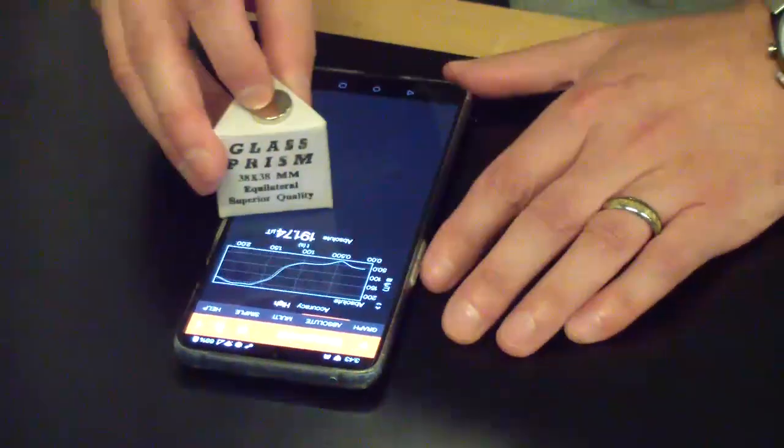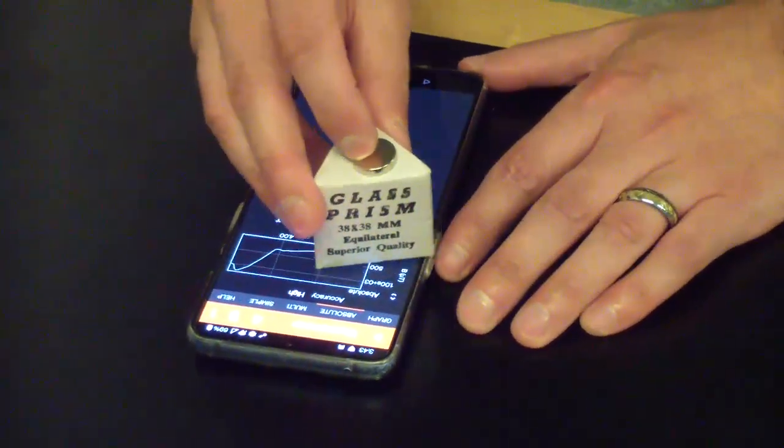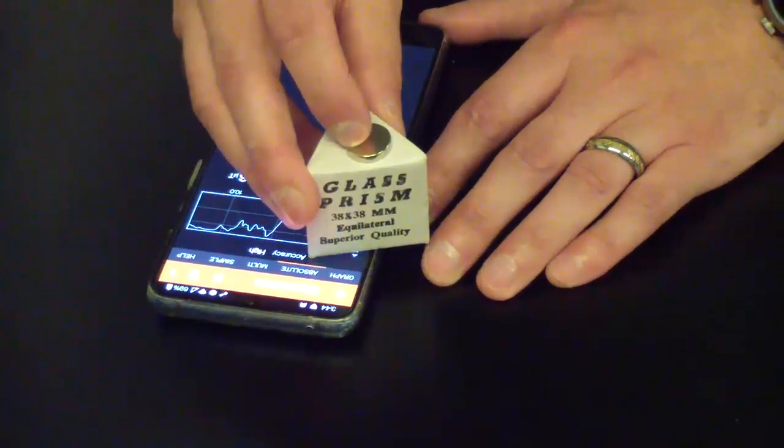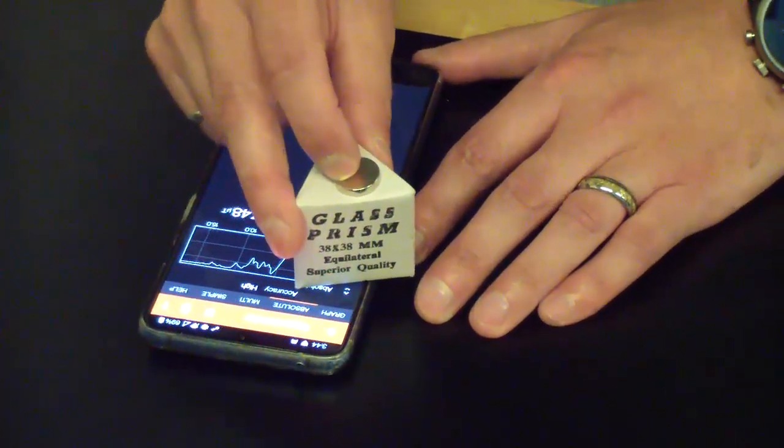In Firefox, start a magnetometer measurement and select Absolute. Move the magnet around until you find the maximum magnetic field value. This is the location of your magnetometer.